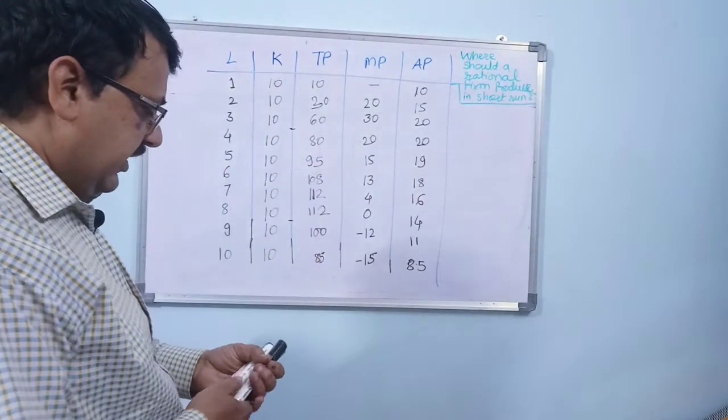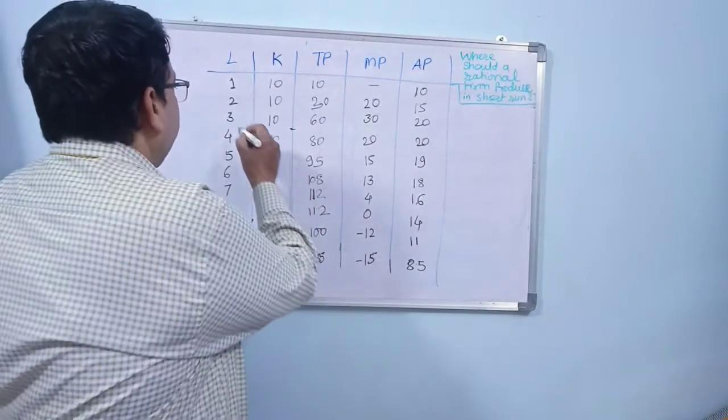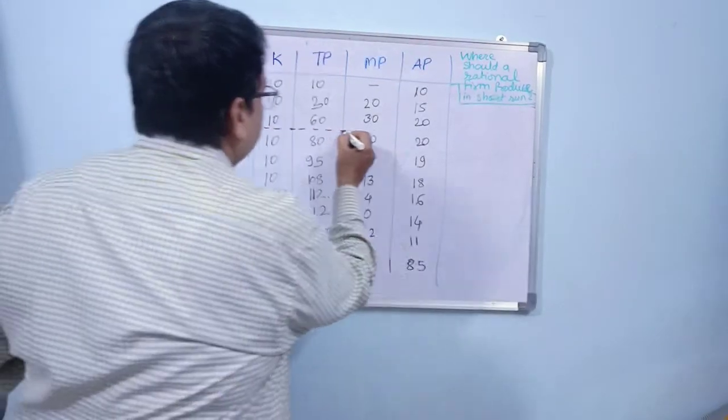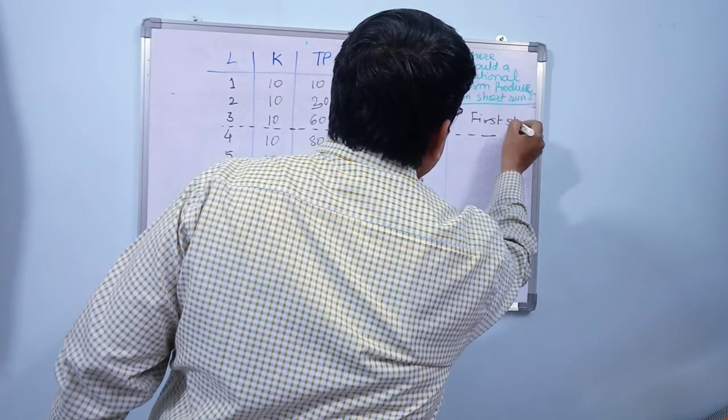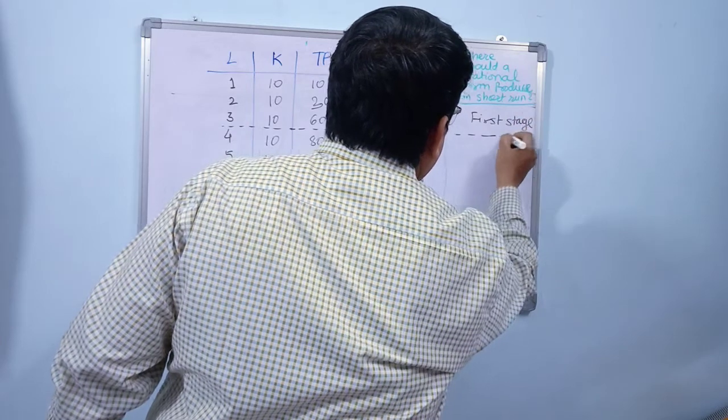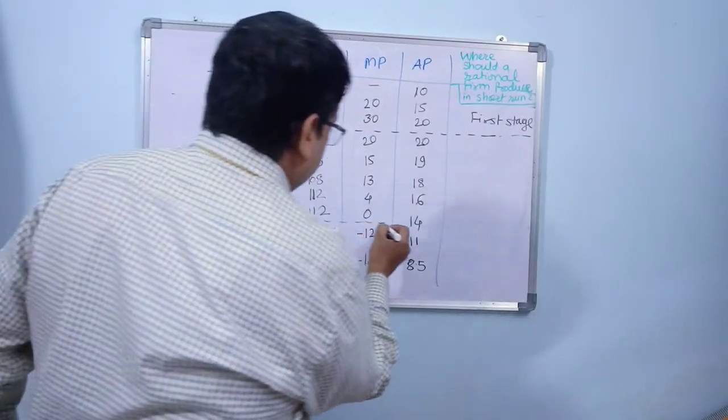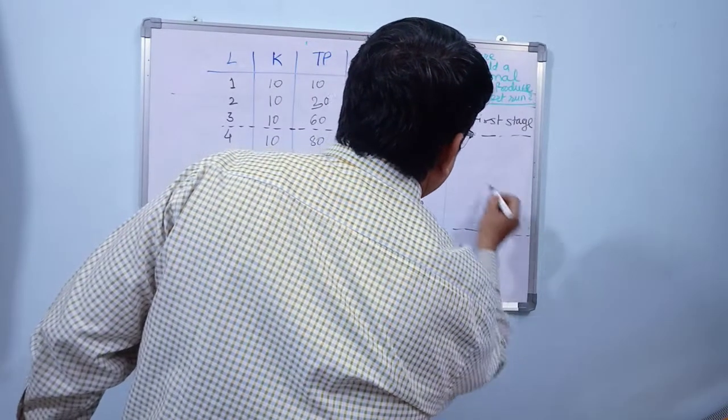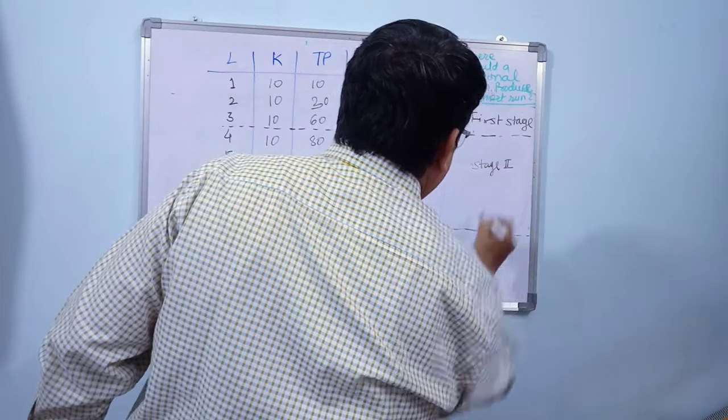You can divide this entire production activity into three different parts. The first one is called the first stage of production, the second one is called stage two or second stage, and the third one is the stage three of production.